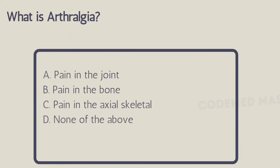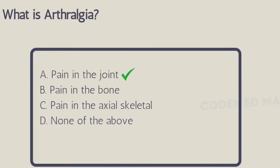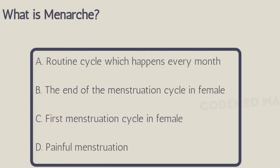Next question: what is arthralgia? Option A: pain in the joint, Option B: pain in the bone, Option C: pain in the axial skeleton, Option D: none of the above. The right answer is pain in the joint, because 'arthro' means joint and 'algia' means pain.